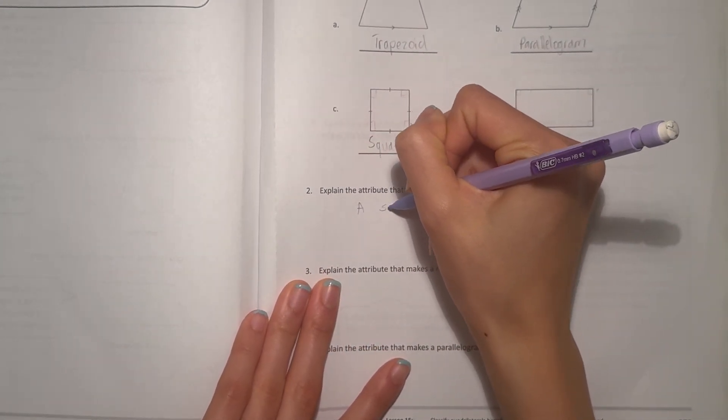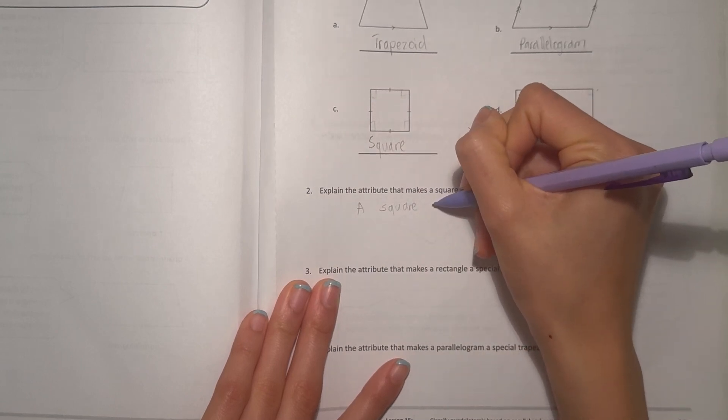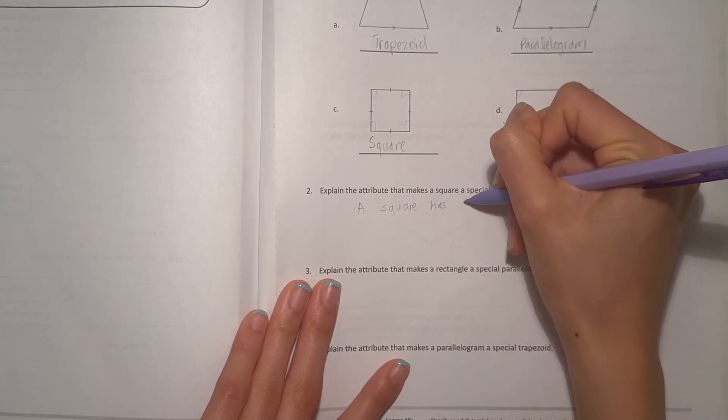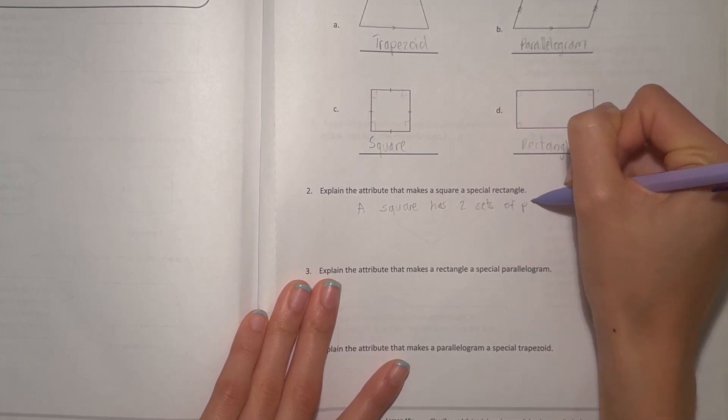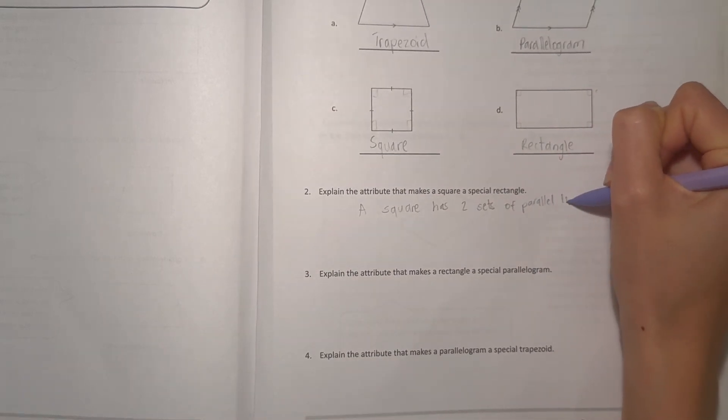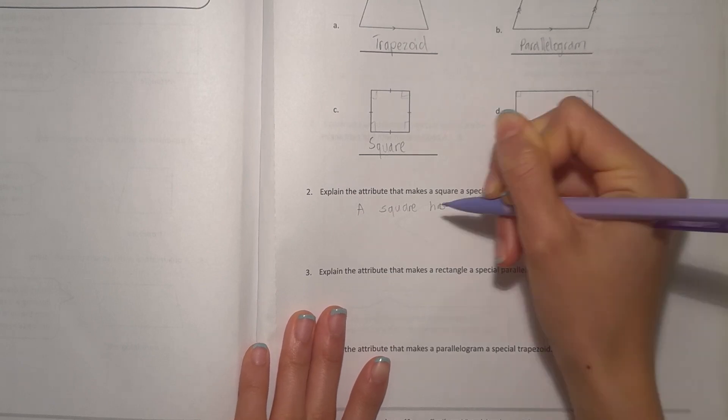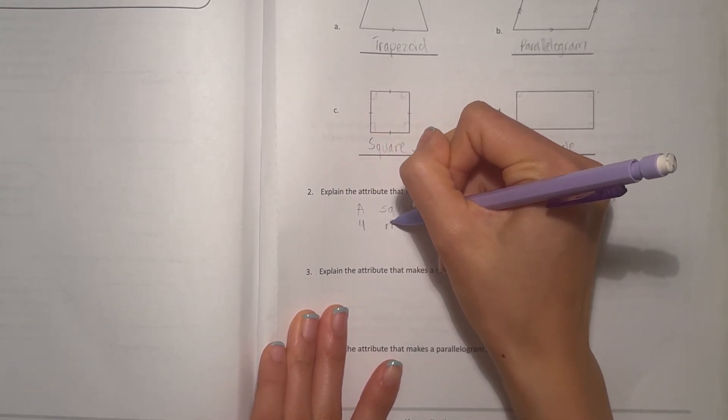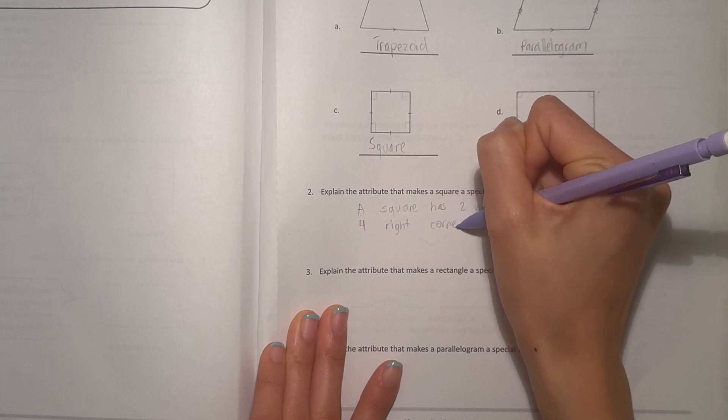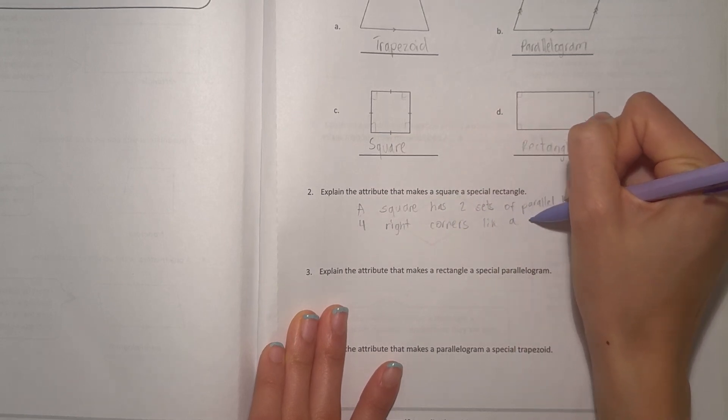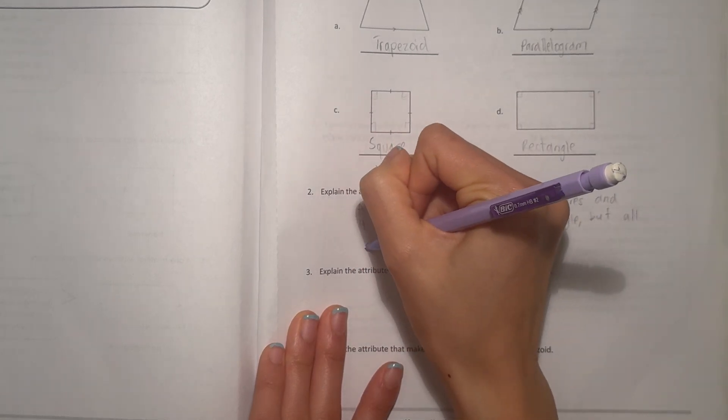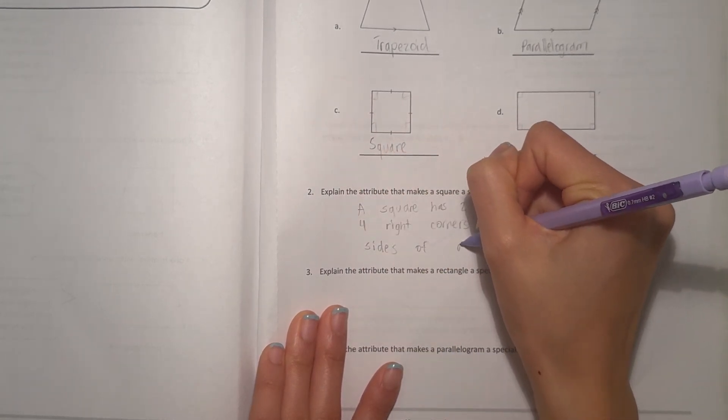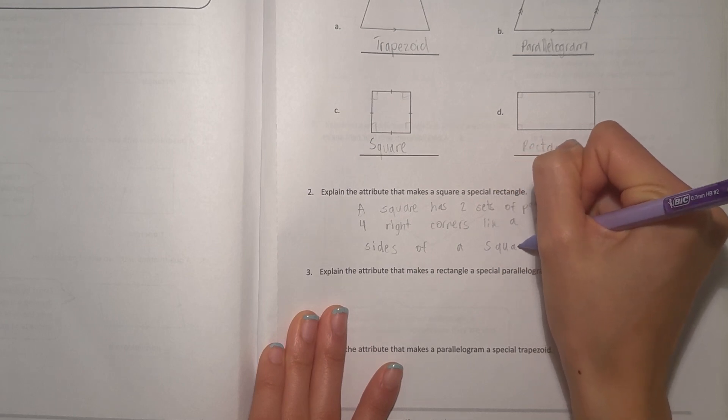a square has two sets of parallel lines and four right corners. They both have four right corners, like a rectangle, but all sides of a square are equal.